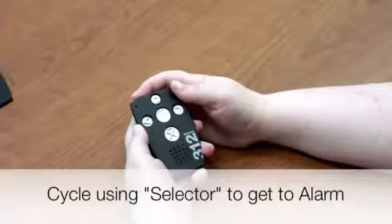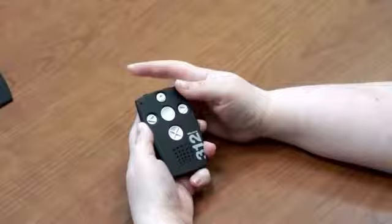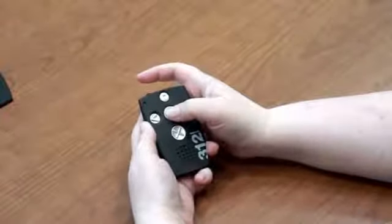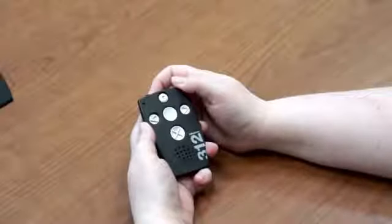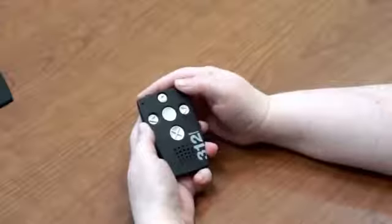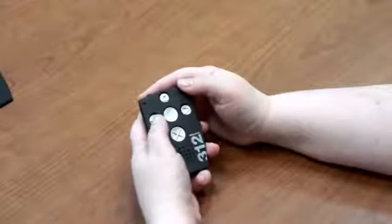If you use the alarm function, press the selector button until you hear Alarm. If you press the play button, the Milestone 312 will announce the current time. To turn the alarm on, press the right arrow button. To turn the alarm off, press the left arrow button.